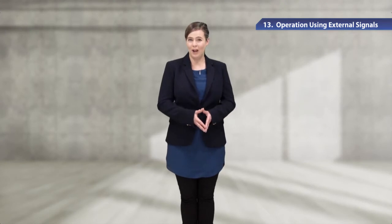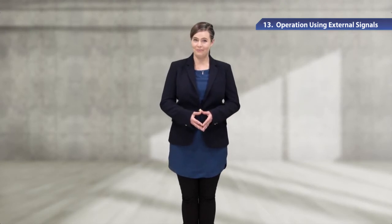Now, let me explain how to wire the control circuit terminals. This figure shows the layout of the control circuit terminals.